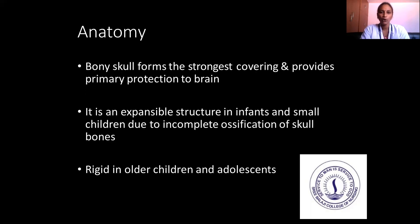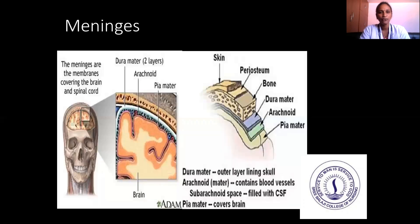First, we will see about the anatomy. The bony skull forms the strongest covering and provides primary protection to the brain. It is an expansive structure in infants and small children due to incomplete ossification of skull bones, and rigid in older children and adolescents. The meninges are the membrane covering the brain and the spinal cord. The outer layer includes the dura mater, and the arachnoid mater contains blood vessels and subarachnoid space filled with CSF.